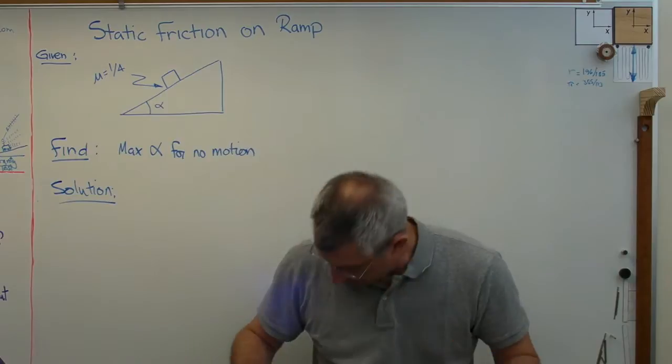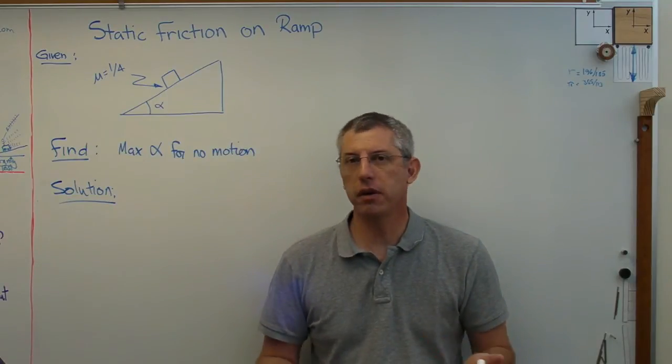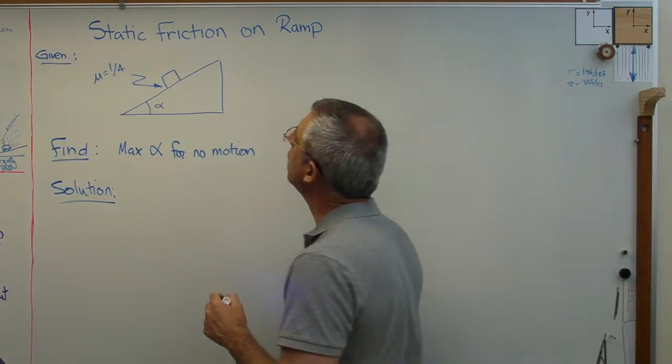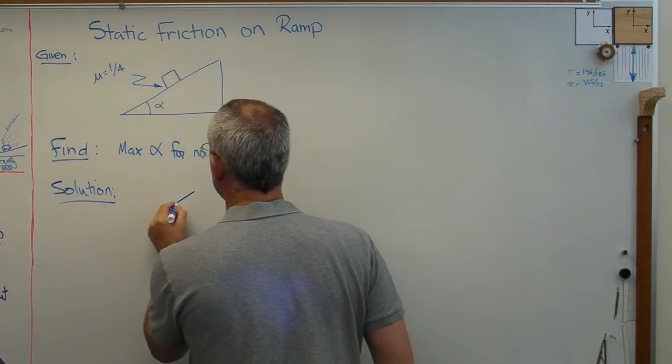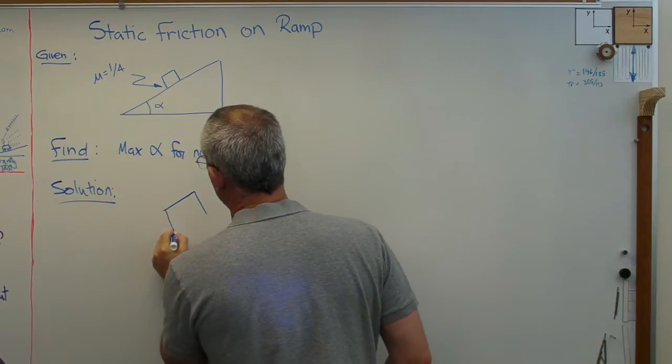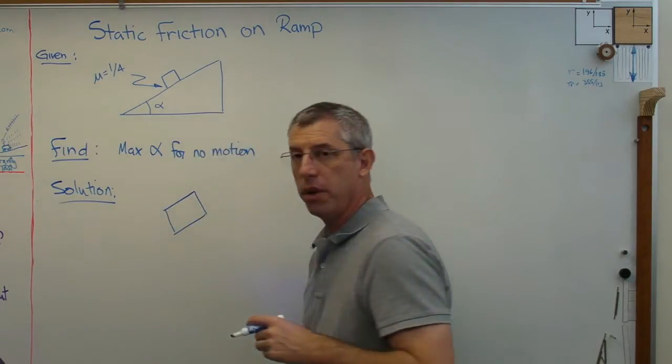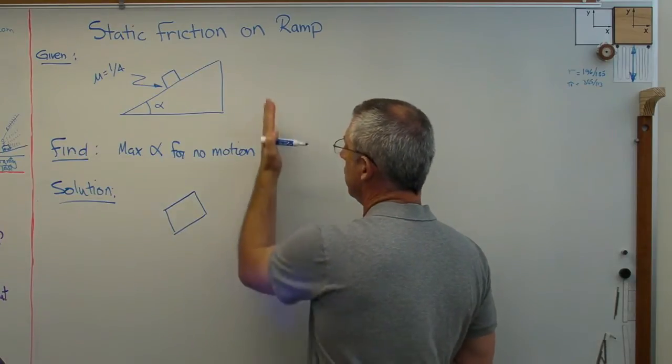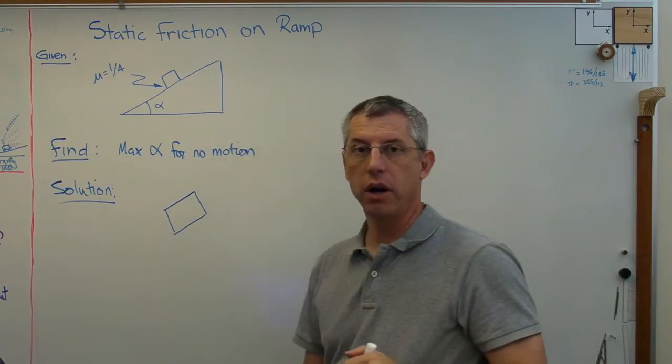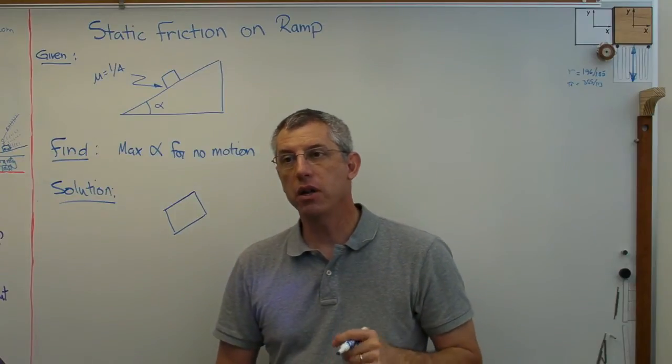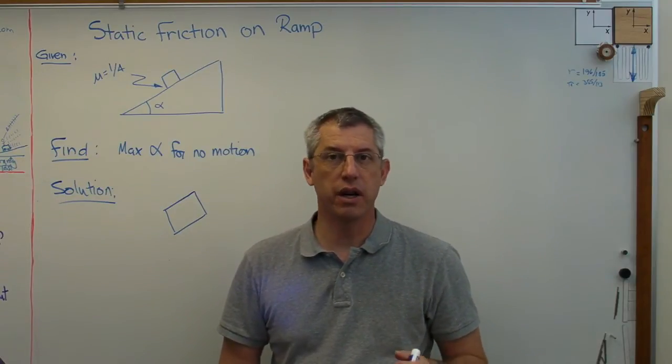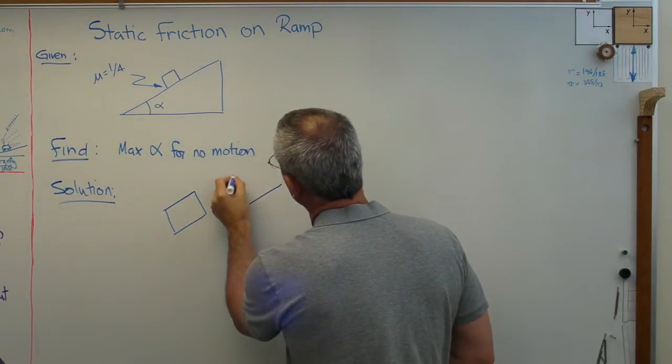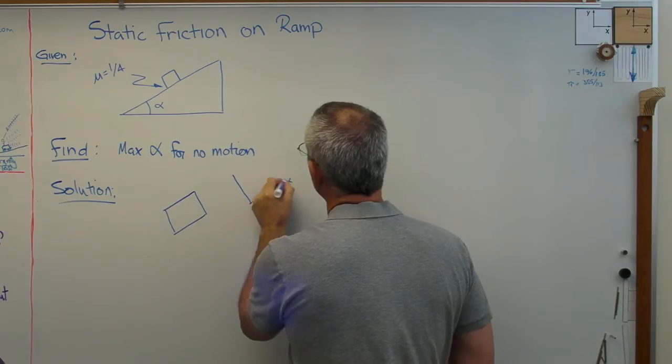All right, how are we going to do this? Well, how do we do every statics problem? The very first step is almost always a free body diagram, and so I'm going to draw a free body diagram of the box. Normally I use a coordinate system that's horizontal with x and y and then moment in the counterclockwise direction, and I always say that I'll do that unless I've got a good reason not to. Today, there's a good reason not to.